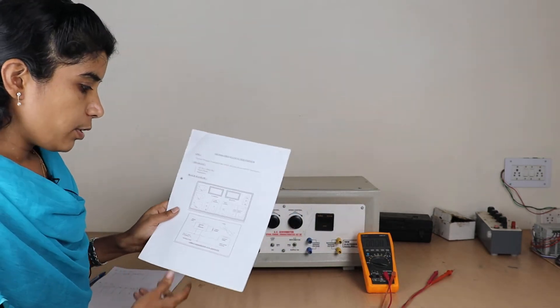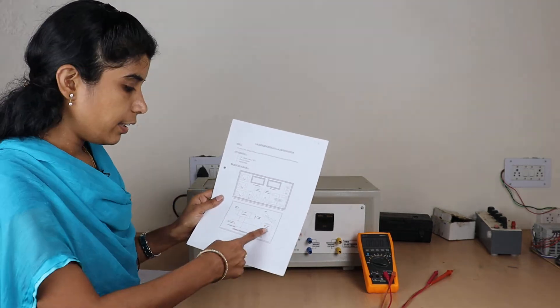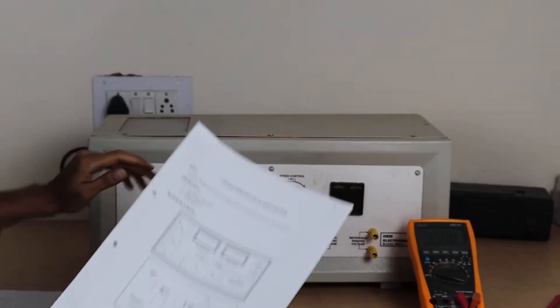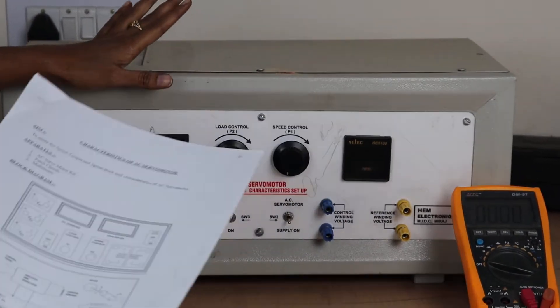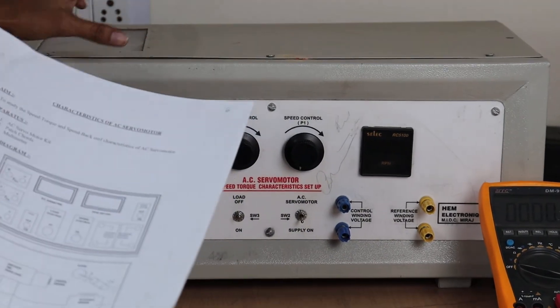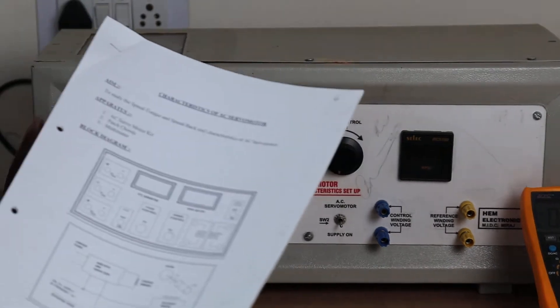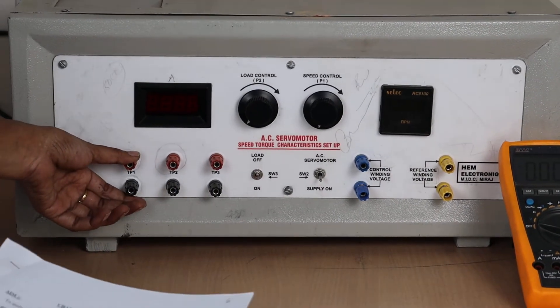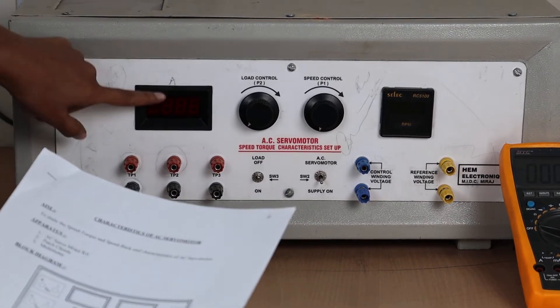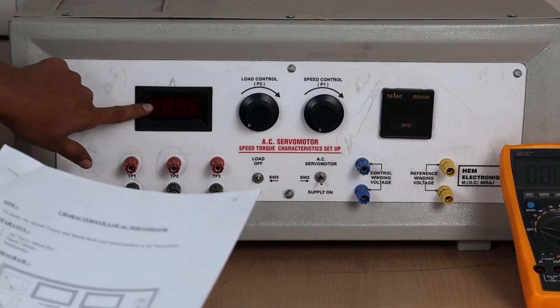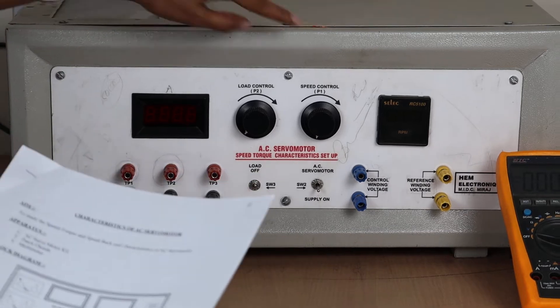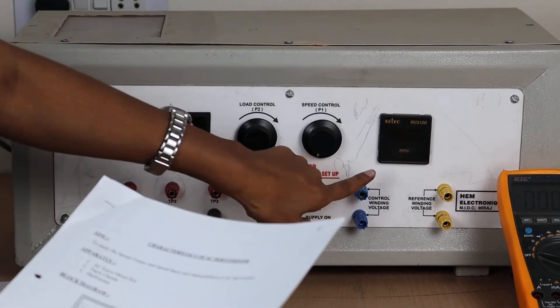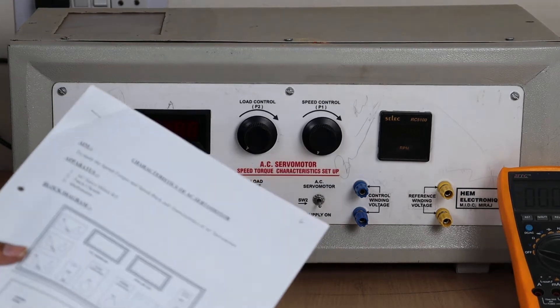AC servo motor will have reference winding, control winding and all these windings and motor all are inbuilt here. So no need to give any external connections. Everything is connected internally. Just we have to connect voltmeter here between these two terminals and ammeter is internally connected. You can see the current rating in this panel board as well as rpm speed can be seen on this display.